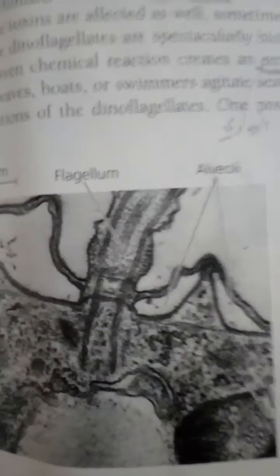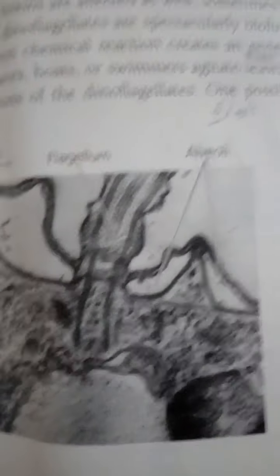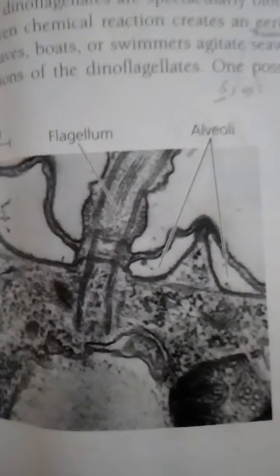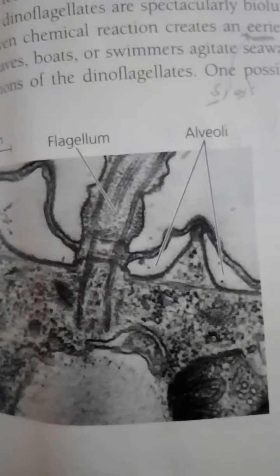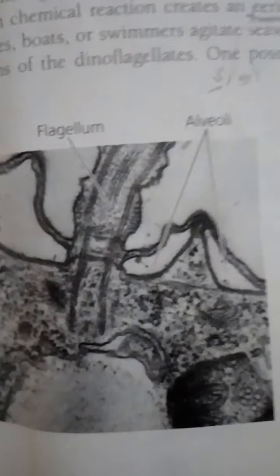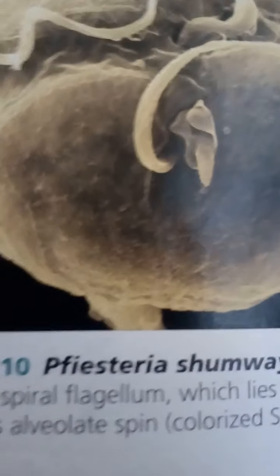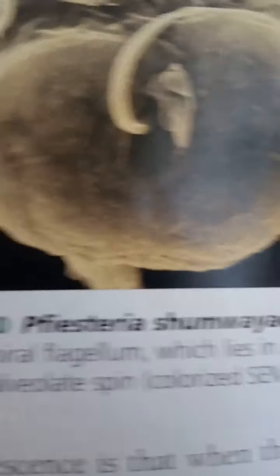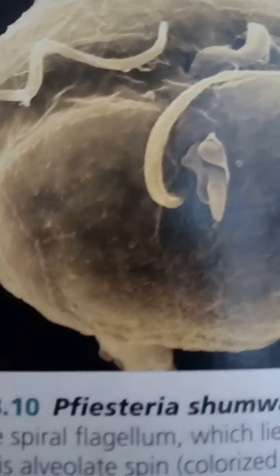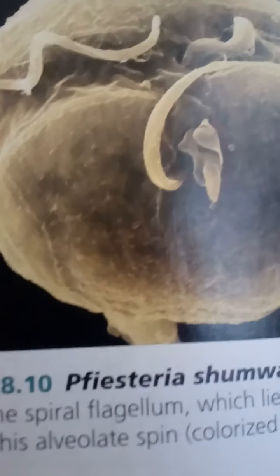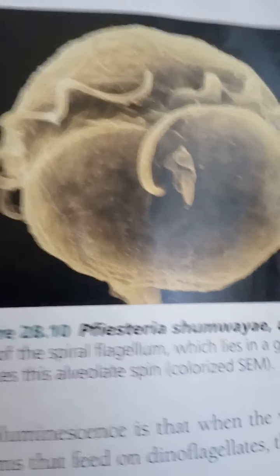Dinoflagellate blooms — episodes of explosive population growth — can cause a phenomenon called red tide in coastal waters. The blooms appear brownish-red or orangish because of the presence of carotenoids, the most common pigments in dinoflagellate plastids.